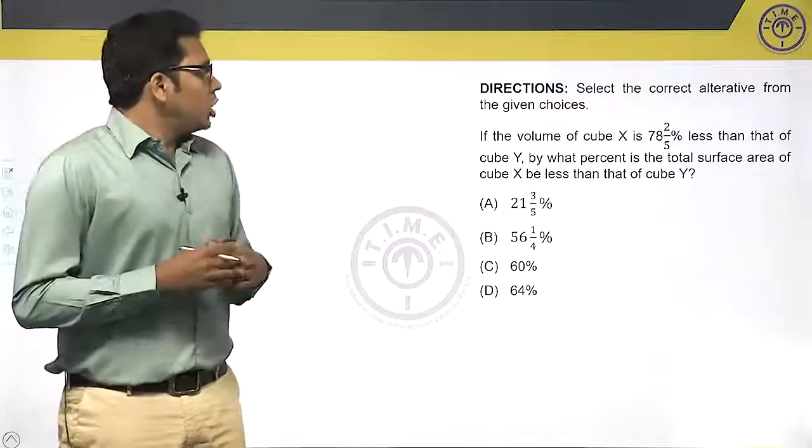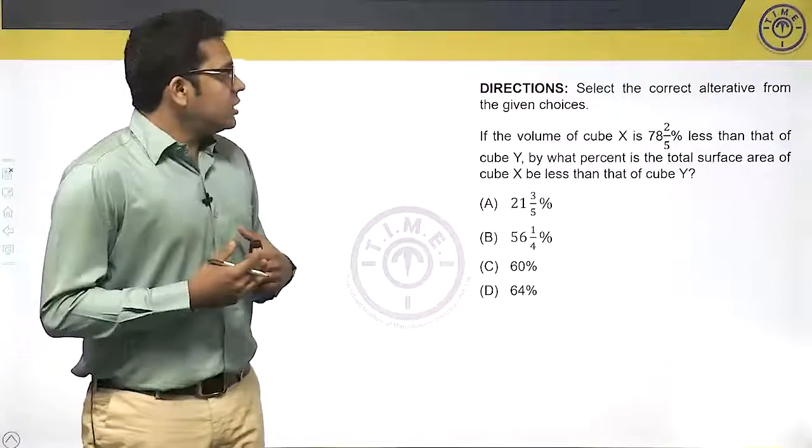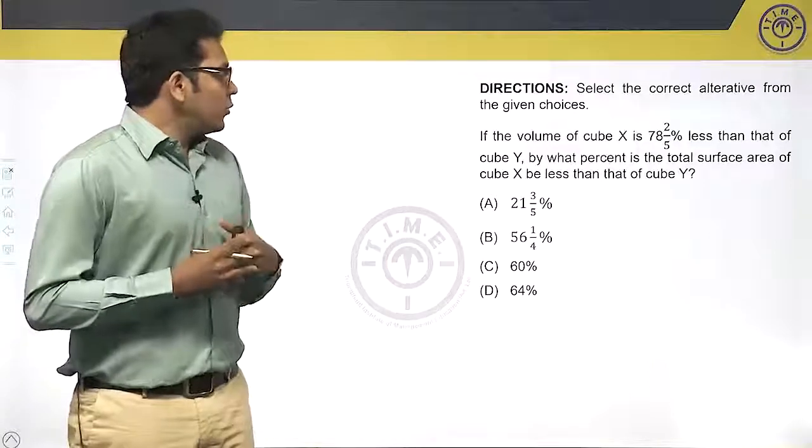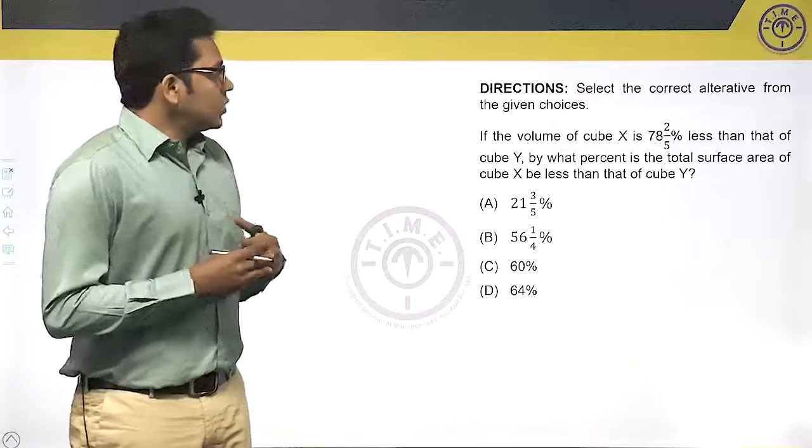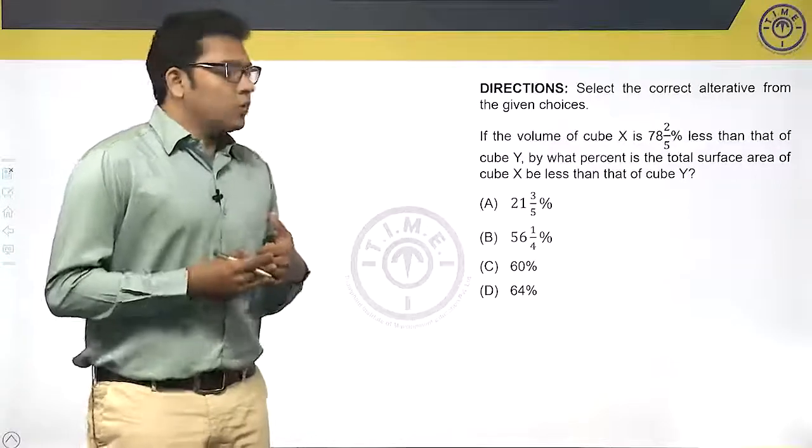Let's look at the question. If the volume of cube X is 78 2/5 percent less than that of cube Y, by what percent is the total surface area of cube X less than that of cube Y?